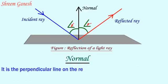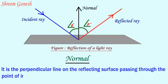Normal: It is a perpendicular line on the reflecting surface passing through the point of incidence.